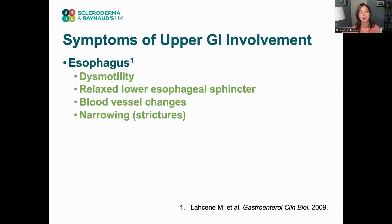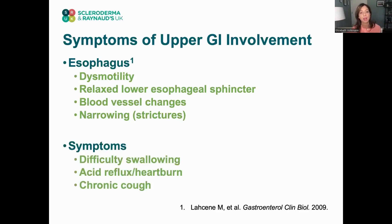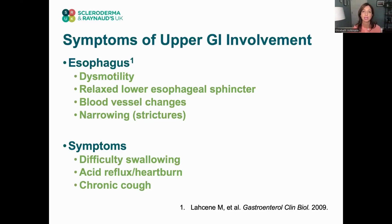Some patients can even have narrowing — strictures in the esophagus — that can make it difficult to swallow. Symptoms here include difficulty swallowing, acid reflux, heartburn, and chronic cough. This is important to realize because often patients and even doctors assume chronic cough must be related to the lungs, asthma, or post-nasal drip. But a common cause of chronic cough in scleroderma is acid reflux, particularly if the cough occurs after eating or first thing in the morning after lying down all night.